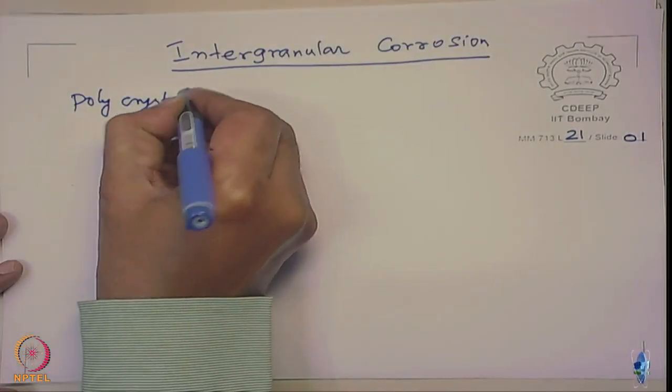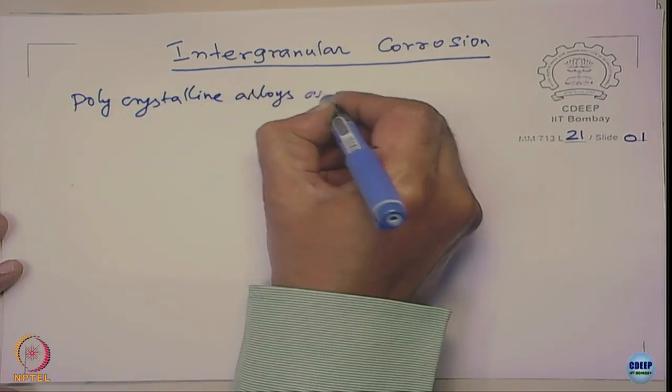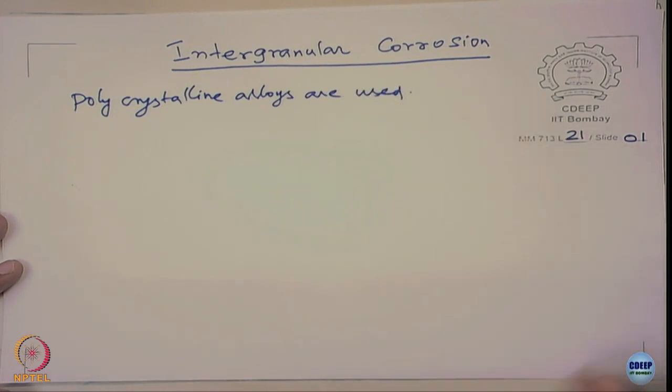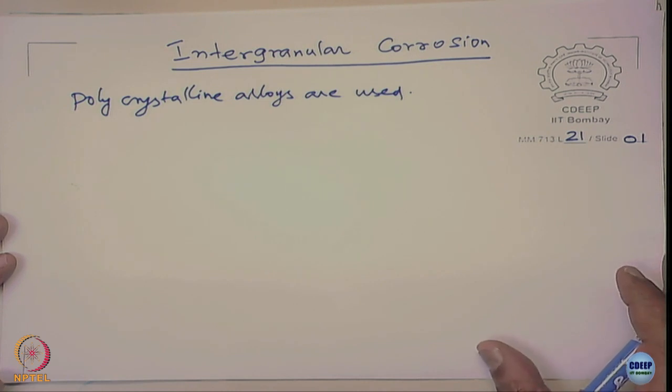This topic becomes important because we more often use polycrystalline alloys. The engineering alloys that we deal with are all polycrystalline. When I say polycrystalline — if you take any of these metallic alloys, grind, polish, and look at the surface with a microscope, you see nice grain boundaries.